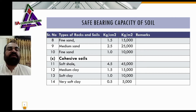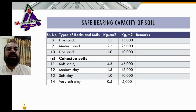Number ten: fine sand, loose and dry — bearing capacity of 1 kg per centimeter square and 10,000 kg per meter square.